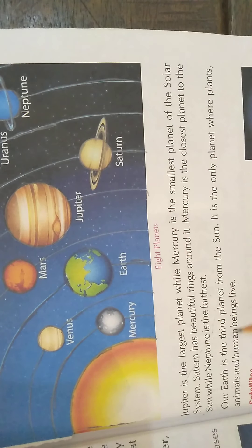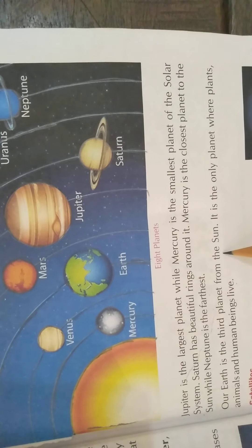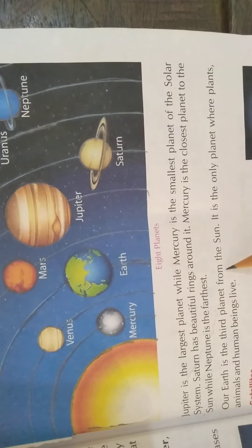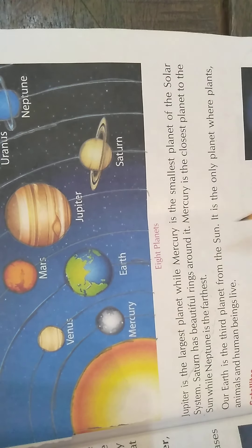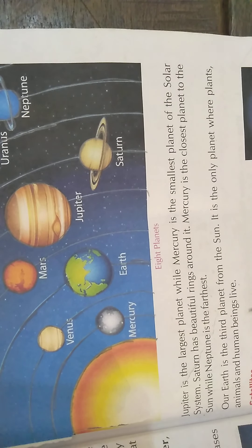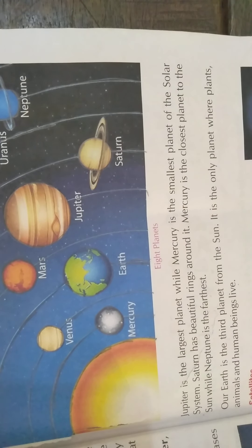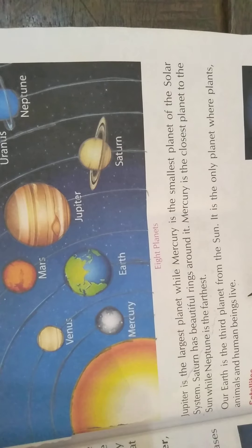Our Earth is the third planet from the sun. You can see easily here. It is the only planet where plants, animals and human beings live.